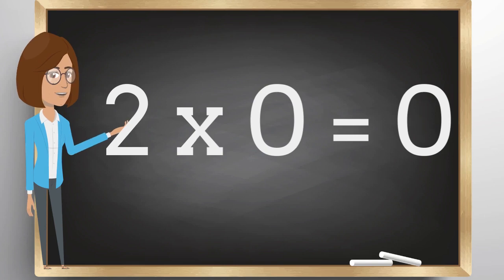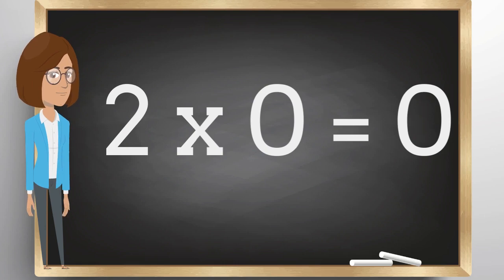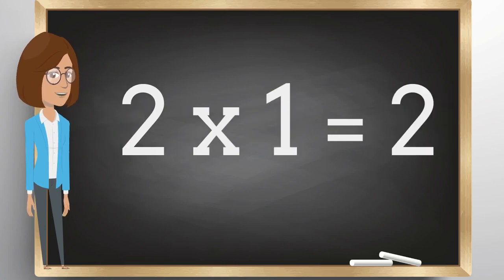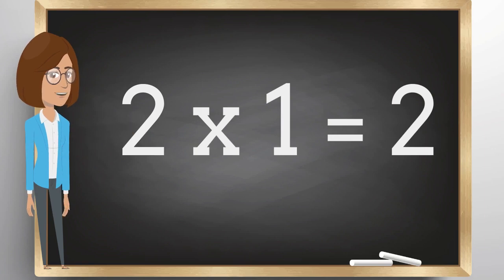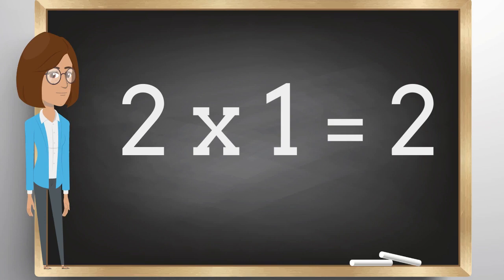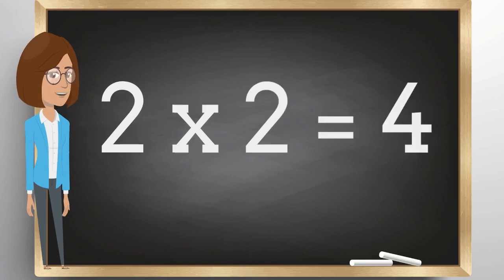Two times zero is zero. Two times one is two. Two times two is four.